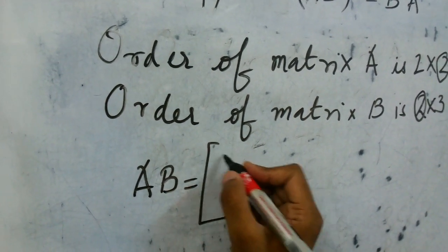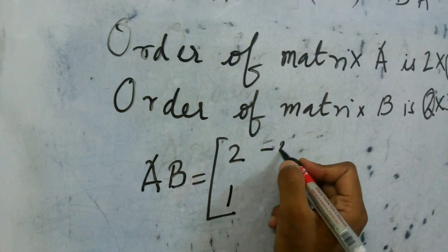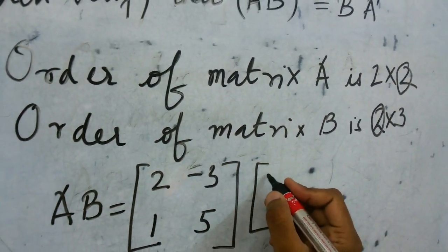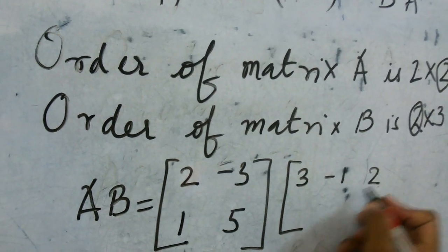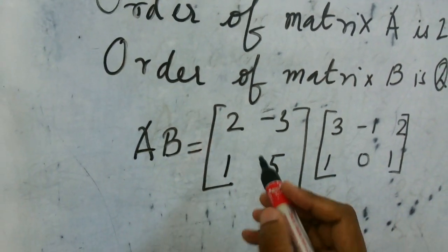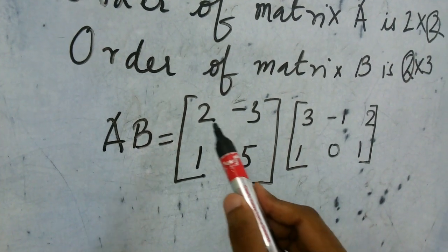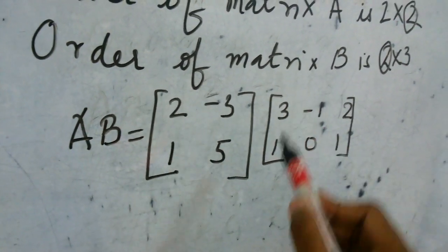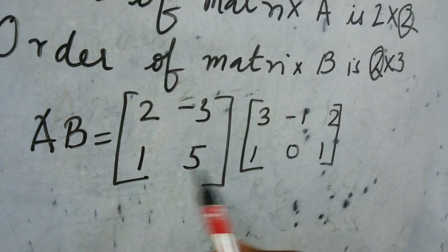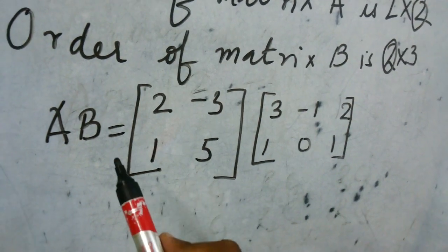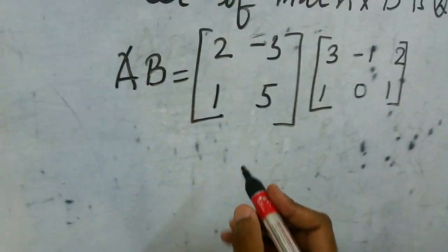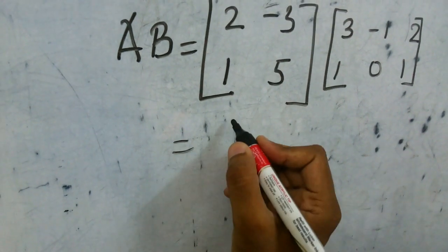So matrix A is [2, 1; -3, 5] and matrix B is [3, -1, 2; 1, 0, 1]. Now the multiplication will be carried out as: R1 into C1, R1 into C2, R1 into C3, then R2 into C1, R2 into C2, R2 into C3.